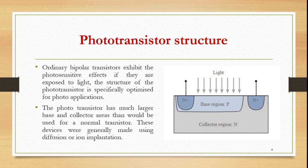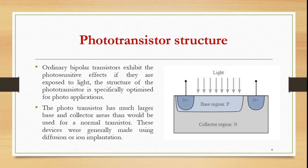You can see the phototransistor structure where there is a collector region — a very large N-type region — a base region that is also large but not as large as the collector, and an emitter region that is smaller than the base. In a simple transistor, the base region is always very small in area, but in a phototransistor, because light is incident on the base region, the base region has a larger area than the emitter.